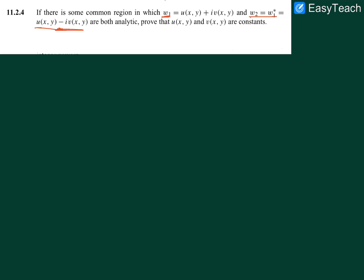In the common region we have to show that if both are analytic then u and v are constant terms. So u and v are constant, they are not the parameters of x and y.